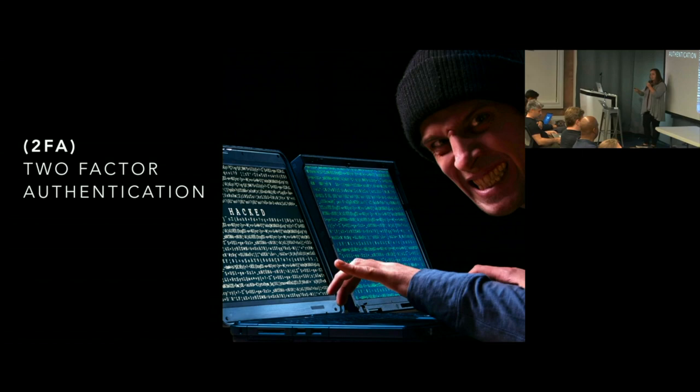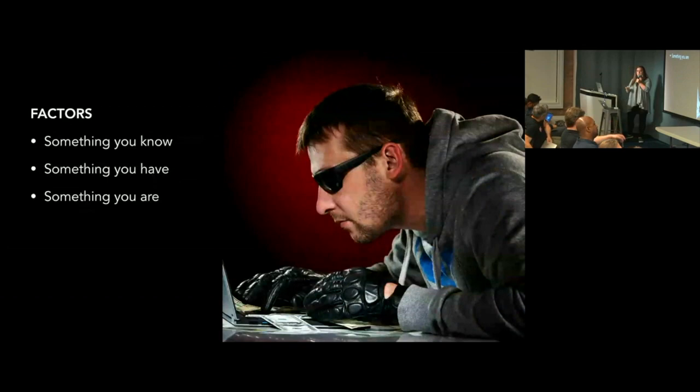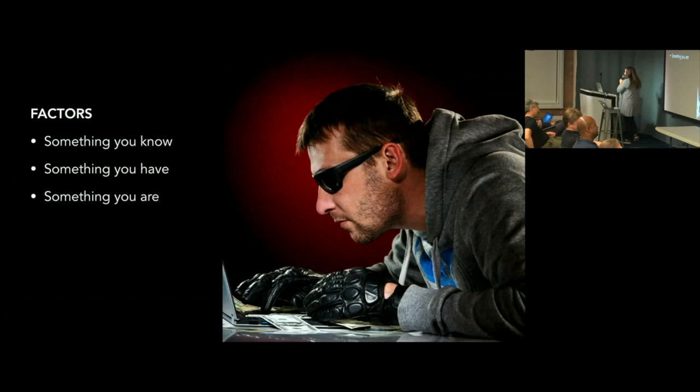The factors we're going to be talking about can be grouped into three buckets. These three types are: something you know — that's going to be like a password; something you have — that might be your phone; and something that you are — maybe that's a fingerprint or now like Face ID with iPhones.